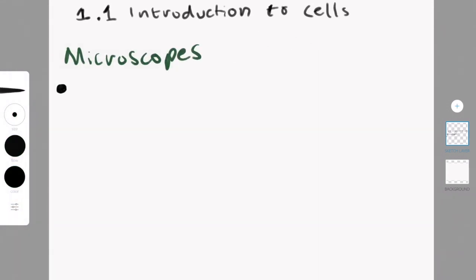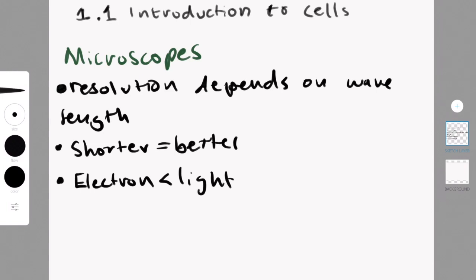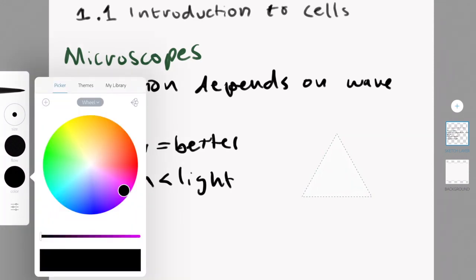This might seem a little bit out of place, but apparently you guys also need to know about microscopes. Luckily, you don't need to know that much. I mean, you have to know how to use it, but for the test purpose, you don't have to know that much. Essentially, resolution depends on wavelengths, and electron wavelengths are shorter than light wavelengths. And shorter equals better, essentially. The shorter the wavelengths, the more you will be able to see. So if you put something under your microscope and use a light microscope and an electron microscope, you'll be able to see more detail and more in-depth using the electron microscope.